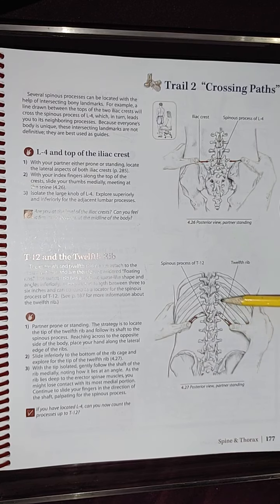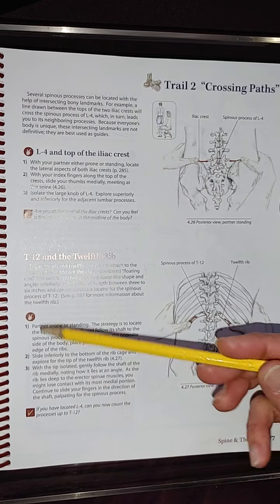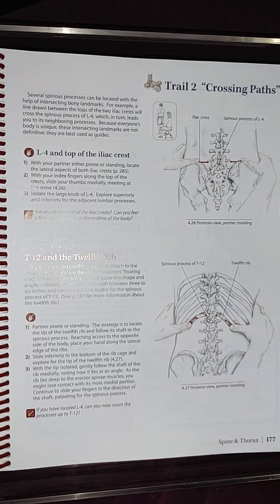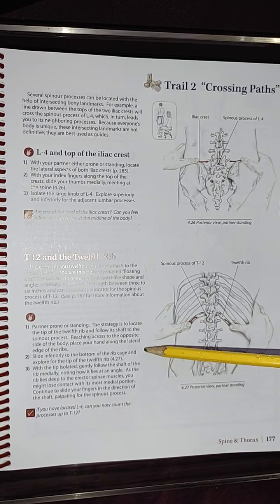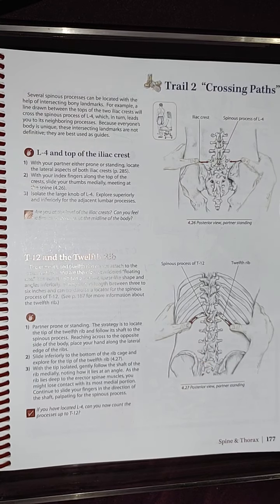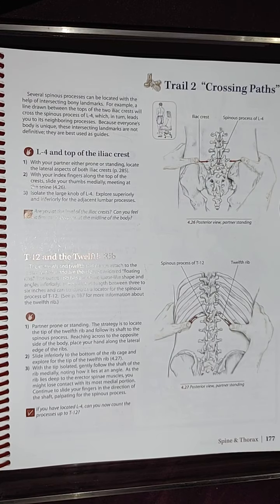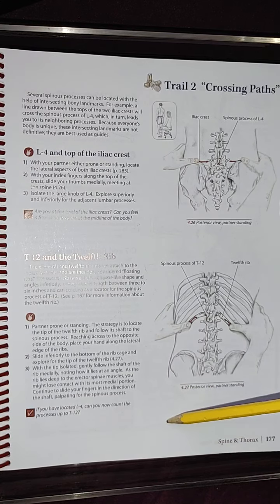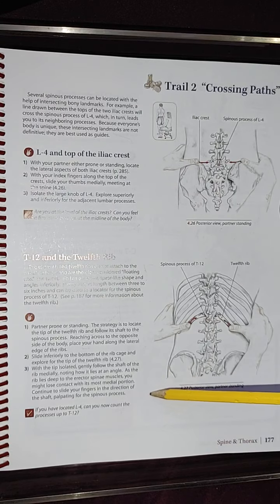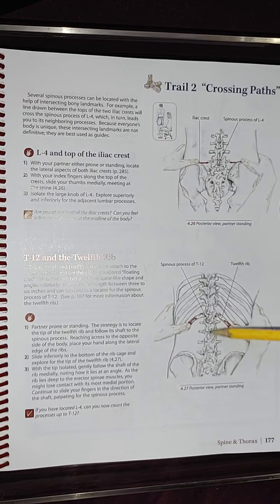For a partner in prone or standing, the strategy is to locate the tip of the 12th rib and follow its shaft to the spinous processes. Reaching across to the opposite side of the body, place your hand along the lateral edge of the ribs. Slide inferiorly to the bottom of the rib cage and explore for the top of the 12th rib. With the tip isolated, gently follow the shaft of the rib medially, noting how it lies at an angle. As the rib lies deep to the erector spinae muscle, you might lose contact with its most medial portion. Continue to slide your fingers in the direction of the shaft, palpating for the spinous process.